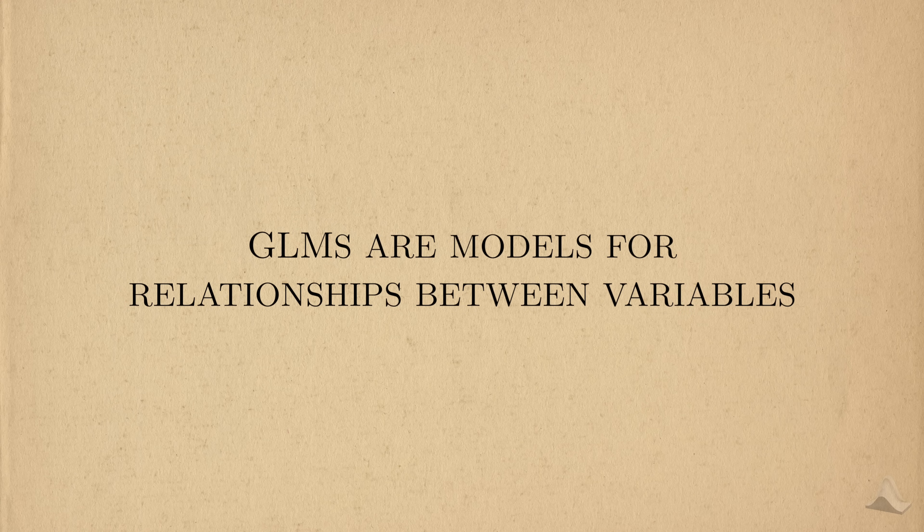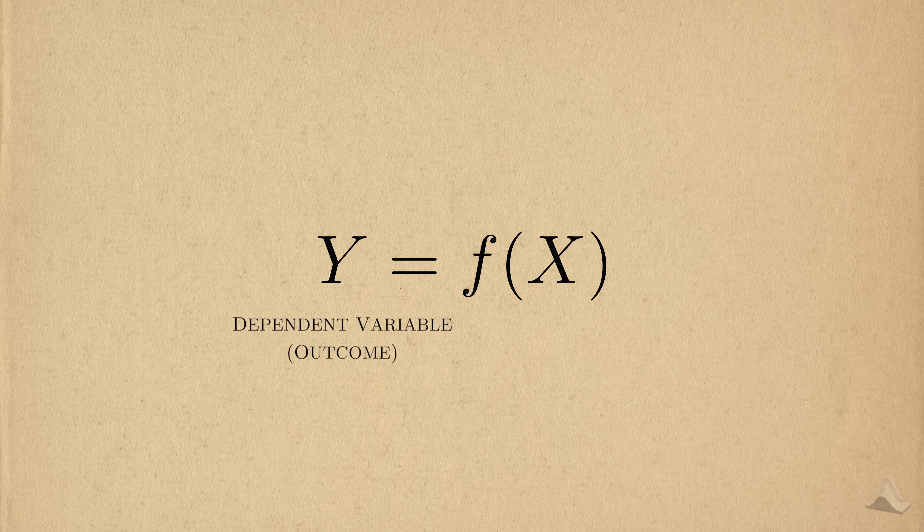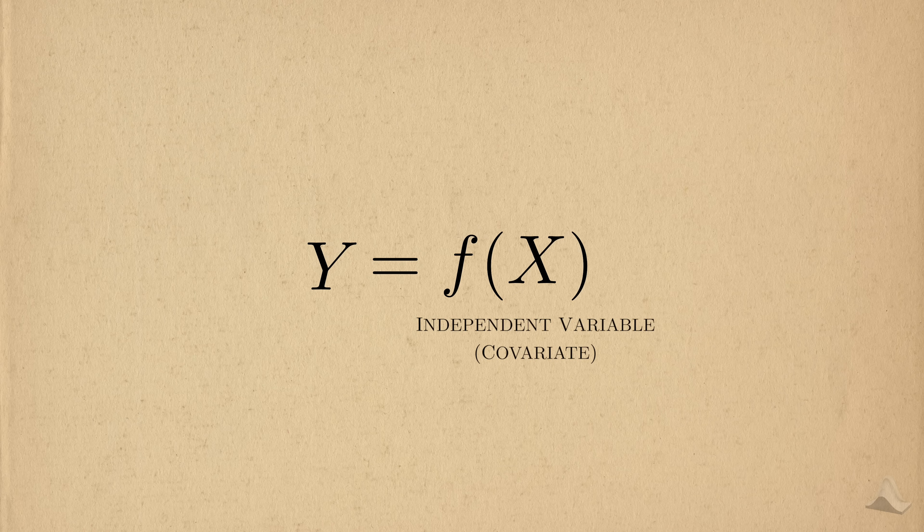GLMs are models for relationships between variables. If you don't know what I'm talking about, here's a quick refresher. We have a dependent variable or outcome y, and we want to see how another variable x, which we'll call a covariate, influences this outcome.